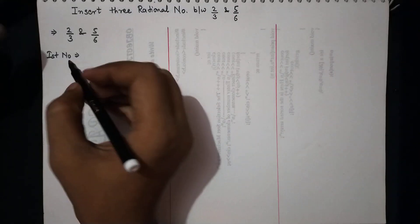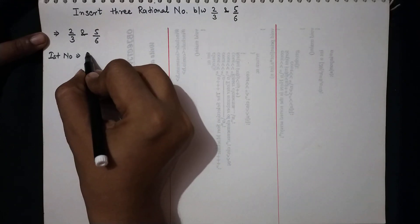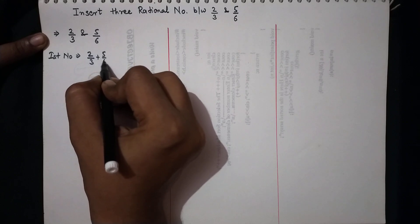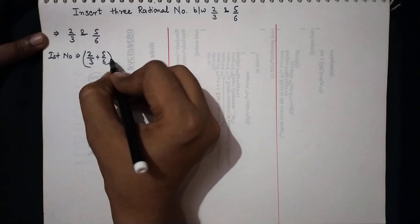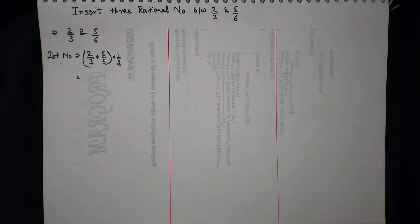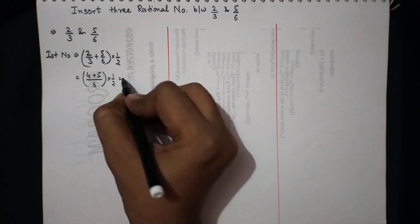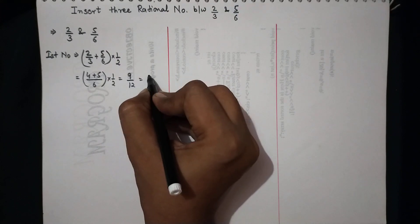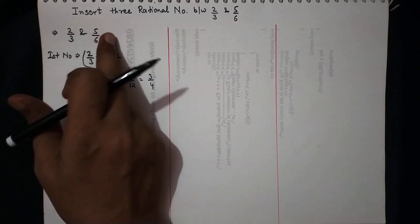For the first number, we take 2/3 plus 5/6, divided by 2. This equals 4 plus 5 upon 6, multiplied by 1/2, which gives us 9/12, and that simplifies to 3/4. Now we have this number between the two given numbers.